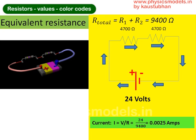So the job here is to find the equivalent resistance in every circuit. So you just add up R1 and R2 for a series circuit and you get 9400 ohms. Plug in Ohm's law and if the battery is 24 volts, then 24 divided by 9400 ohms will give you 0.0025 amps.